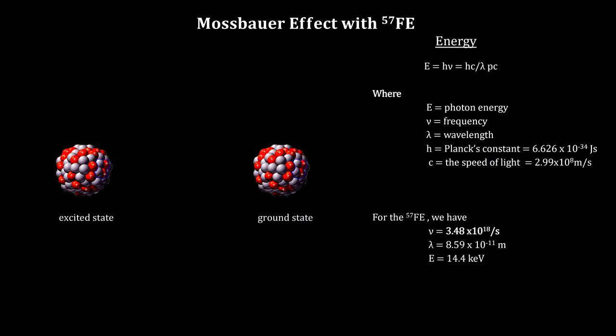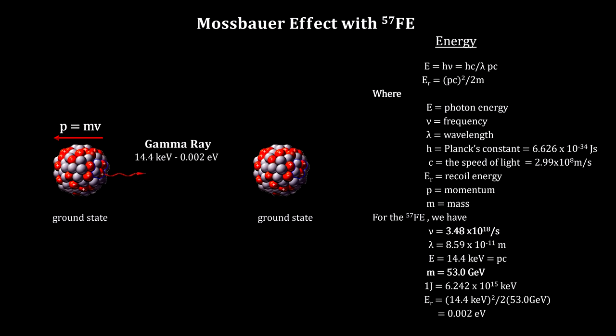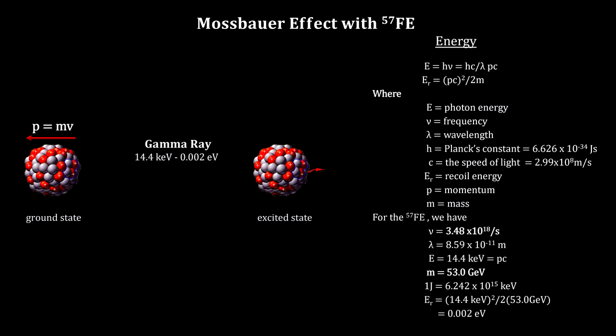The problem is that when the gamma ray is ejected, the nucleus recoils. Because of energy momentum conservation, the recoiling energy reduces the energy of the gamma ray. The gamma ray is no longer a match for the other nuclei, and it moves right through. There is no absorption.